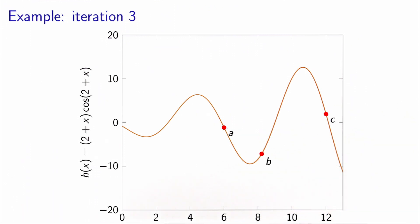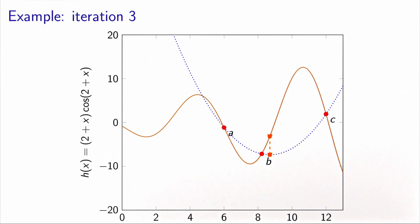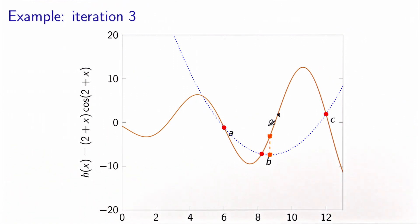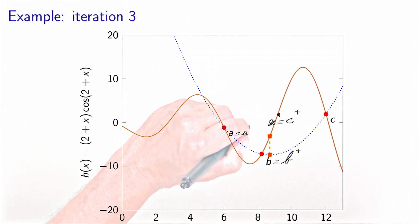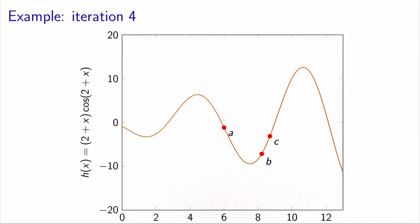At iteration three, we start from the updated points and interpolate another parabola. The minimum x-star is to the right of B, making it a candidate to replace B or C. Since h(x-star) is greater than h(B), x-star replaces C. The remaining points A and B stay the same, yielding a new set A, B, C that again satisfies all the desired properties.